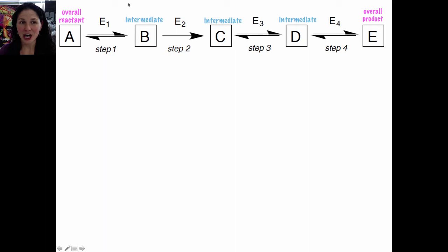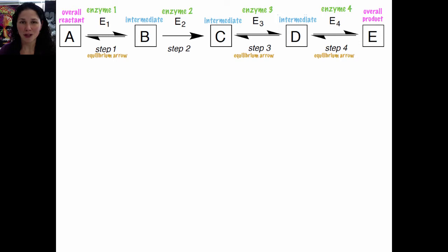The enzymes here are E1, 2, 3, and 4. These are the enzymes that catalyze each step of the reaction pathway. Equilibrium arrows are shown in steps 1, 3, and 4, but step 2 is not an equilibrium arrow — we'll call this a non-equilibrium arrow. Equilibrium arrows represent reversible steps; reversible steps go in either direction.